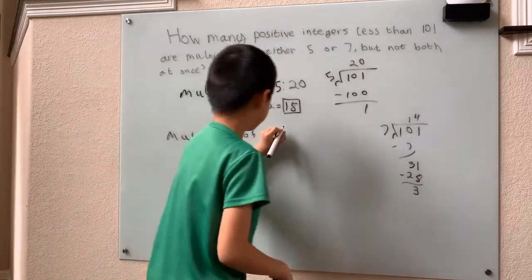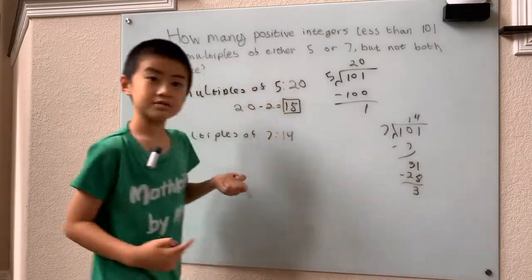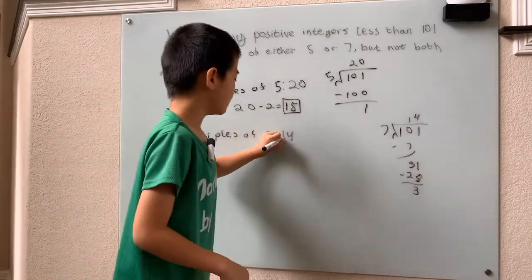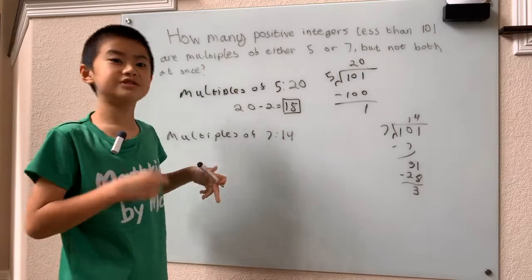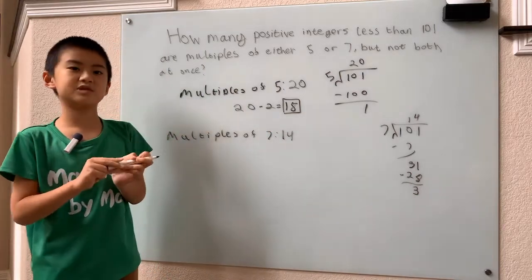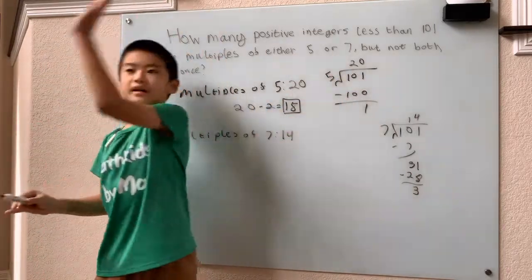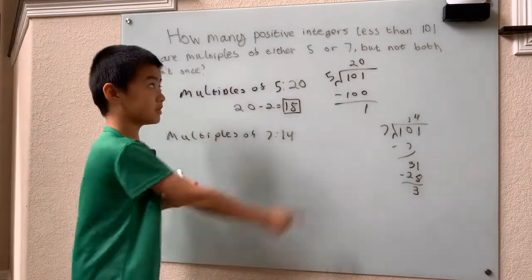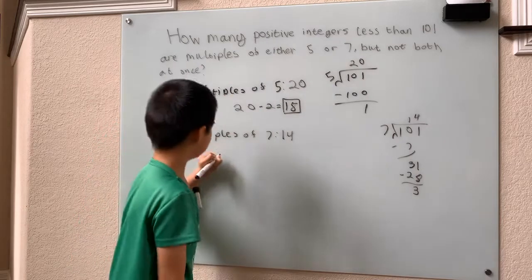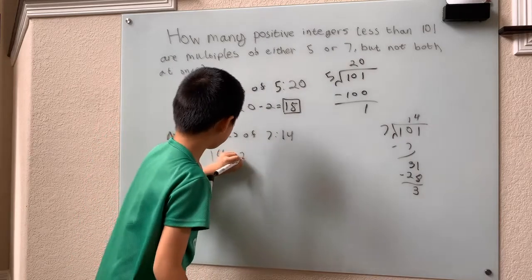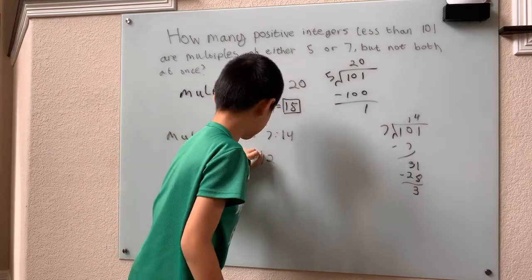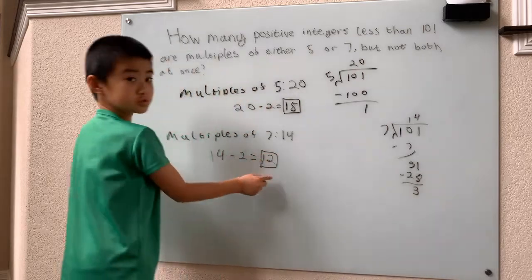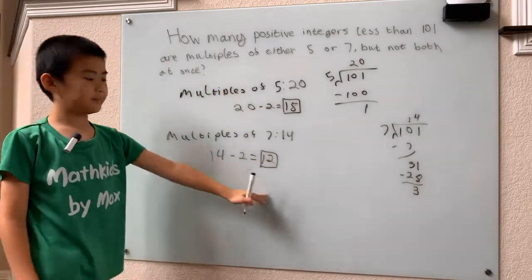So that means there's 14 total multiples of 7. And well, again, according to our rule, there's again two special multiples of 7, 35 and 70. That means they're both multiples of 5, but we can't have that. So that means we just have 14 minus 2, only 12 good multiples of 7. Go ahead, box that in.